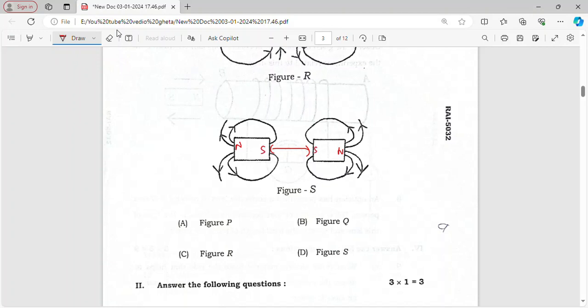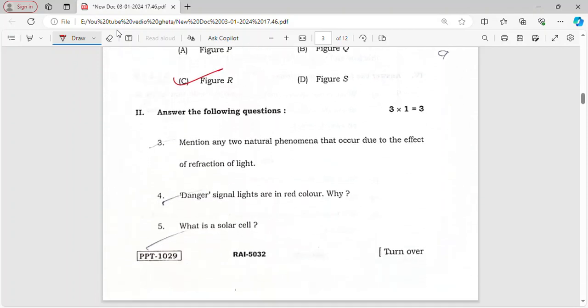Mention any two natural phenomena that occur due to refraction of light. Two phenomena are twinkling of stars and early sunrise and delayed sunset.